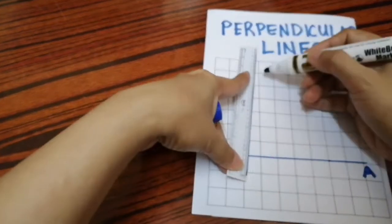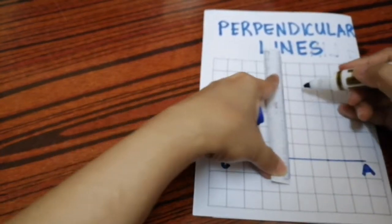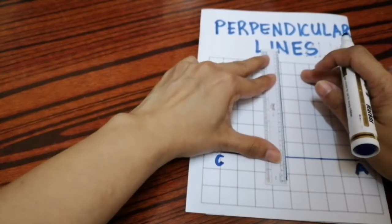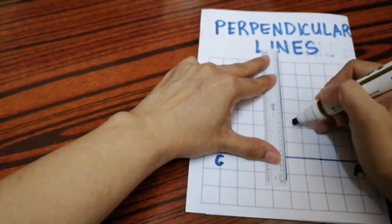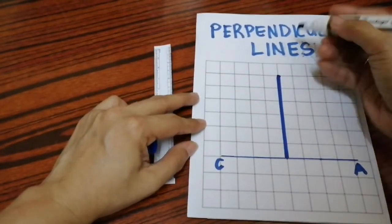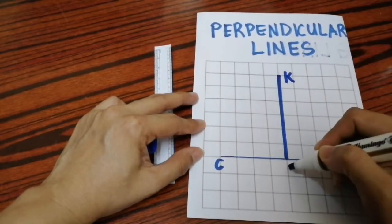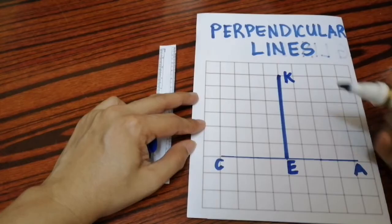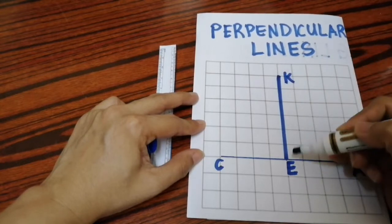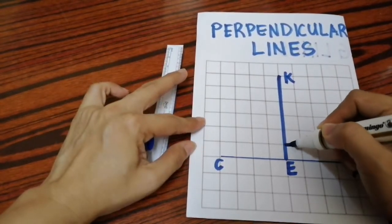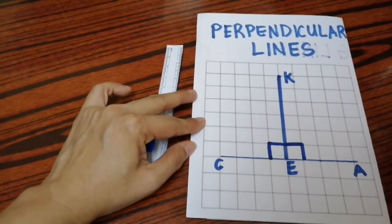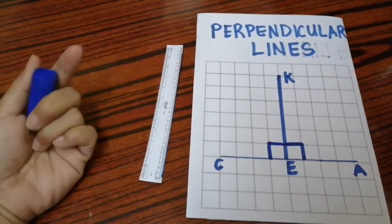Now let us draw a line crossing over line CA to create a perpendicular line. You can choose from here, in the middle, or near point A — I'll do mine in the middle. One, two, three, four, five, six squares down, and I shall name this line KE. So we have line CA perpendicular to KE, because of this right angle here and another right angle here.